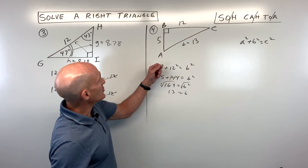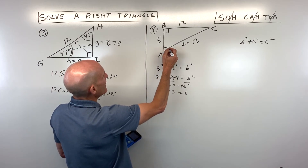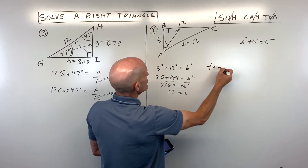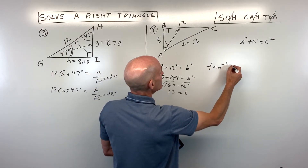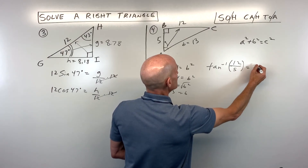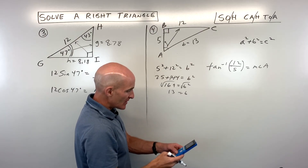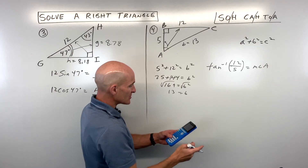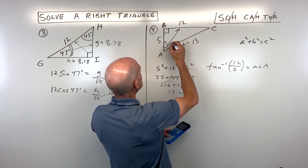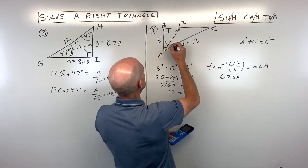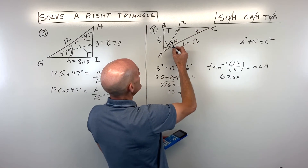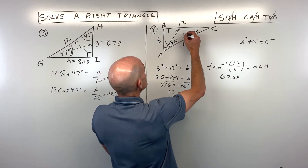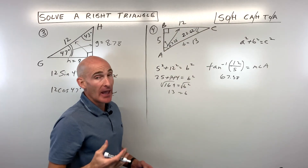Now let's solve for angle A. Positioned at angle A, we have the opposite side and the adjacent side — opposite over adjacent is tangent. Since we're solving for the missing angle, we use the inverse tangent of the opposite over the adjacent. Press the inverse key on your calculator; tangent inverse of 5 over 12 comes out to approximately 67.38 degrees. Since the two acute angles are complementary, angle C equals 90 minus 67.38, which is 22.62 degrees.